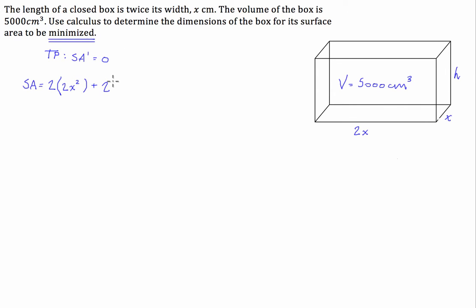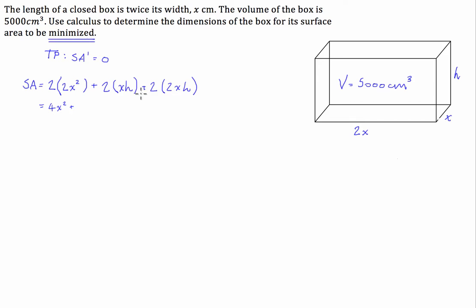So we've got 2 times 2x times x is 2x squared. Then we're going to add x times h, times 2 for the left and right sides, plus 2 times xh. Plus 2 times 2x times h for the back and the front, so 2xh. Multiplying all those out, we get 4x squared plus 2xh plus 4xh, which is 6xh.